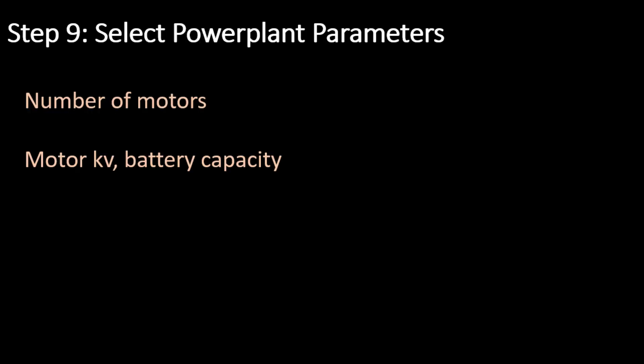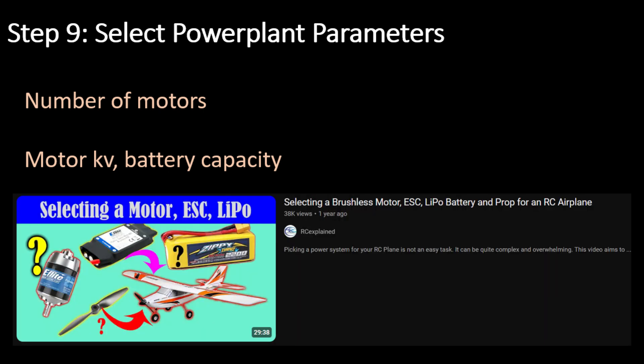Step 9: Select your power plant parameters. If using electric propulsion, choose the number of motors, motor kV, battery capacity, and so on, based on the power loading you selected. I found the video by RC Explained very helpful during this step, as it aims to simplify the process as much as possible and provide a good guideline to follow.